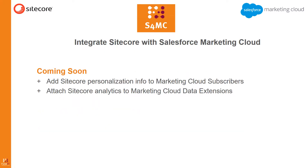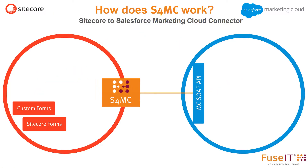Coming soon, to strengthen the relationship between Sitecore and Marketing Cloud with AS4MC, is the ability to seamlessly push Sitecore personalization information to the Marketing Cloud subscriber record, and also the ability to attach Sitecore analytics to Marketing Cloud data extensions. Sounds great, but how does this work?